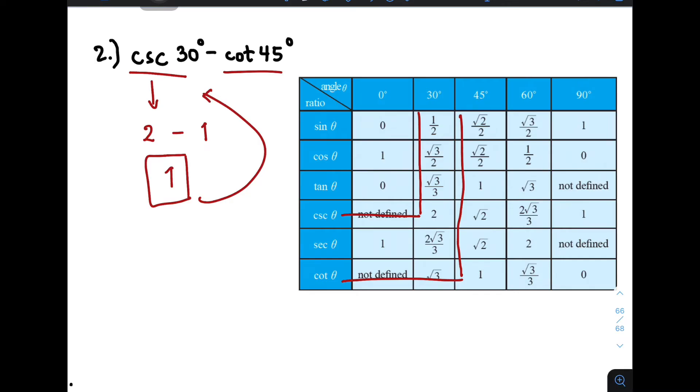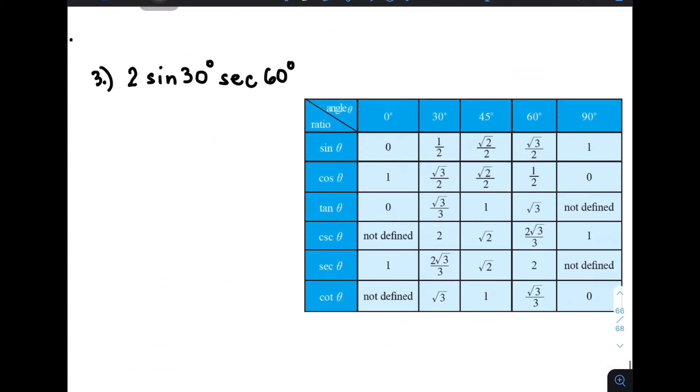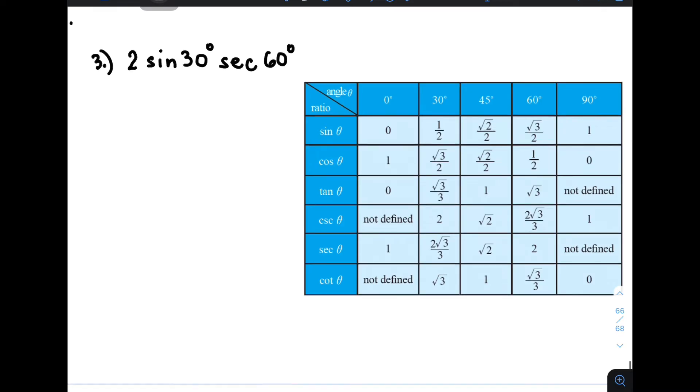And as you can see, the process on how to do this is very easy, as long as you know how to manipulate or simplify expressions. So let's move on with item number 3. For number 3, we are given 2 sine 30 degrees and secant 60 degrees.